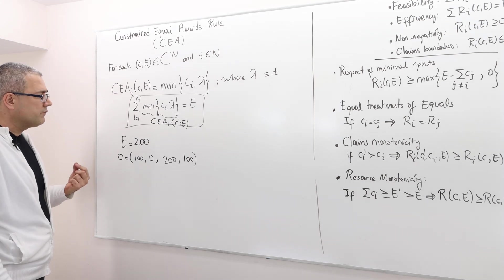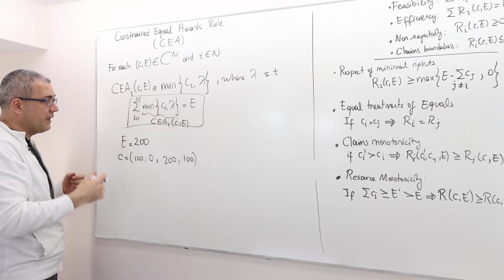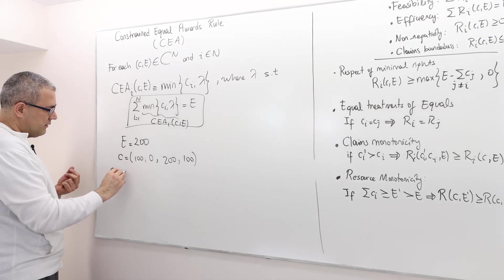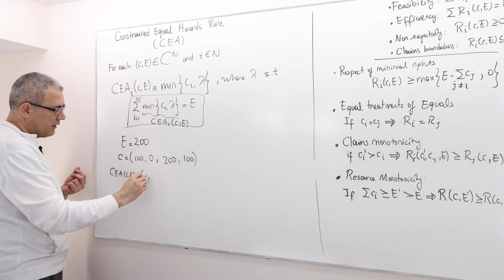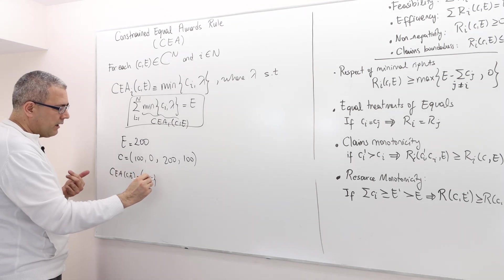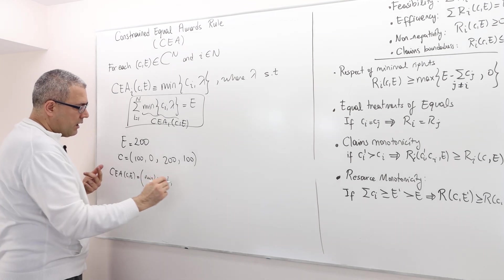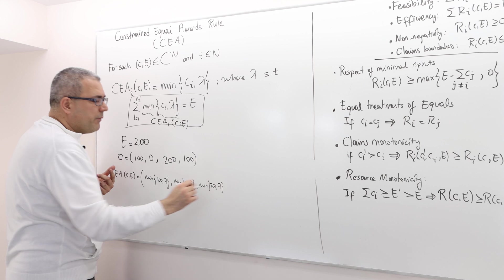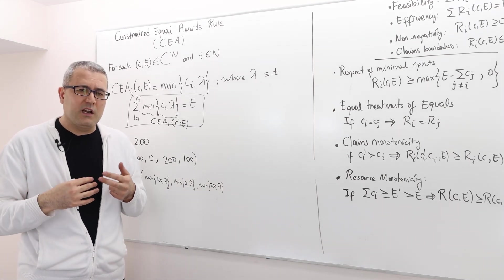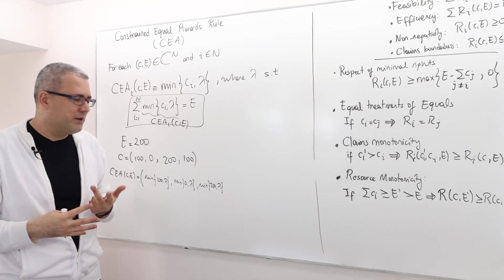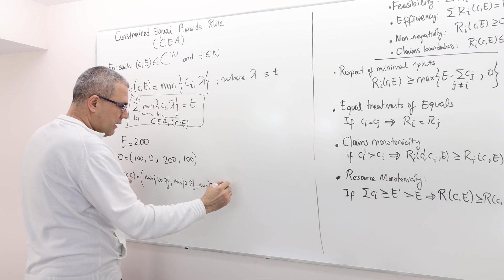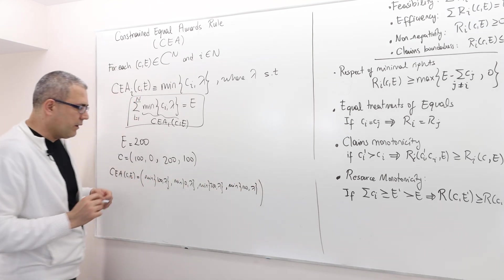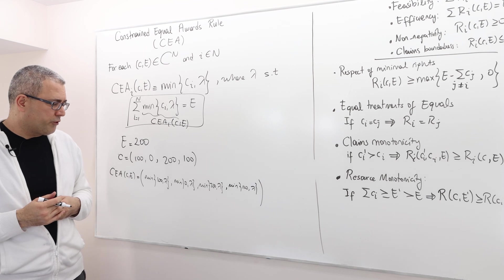If this is the case, how do I find the award vector CEA? Remember, this is what has to be the case. I basically look at the following: the CEA vector under this problem CE is going to be the minimum of ci comma lambda. So minimum of 100 or lambda (which I don't know), minimum of 0 lambda, minimum of 200 lambda, and minimum of 100 lambda. These min operators are not so easy to work with, but in fact they are not so complicated if you look at them carefully.